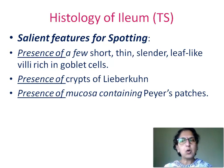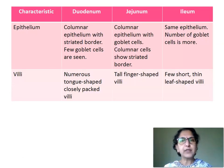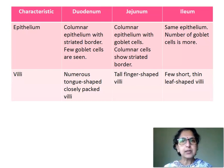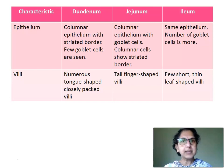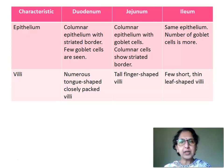Now that we have studied all three slides of histology of the small intestine — duodenum, jejunum, and ileum — let us see how to differentiate between the three. Regarding the epithelium: lining epithelium of villi in duodenum is columnar epithelium with striated border having very few goblet cells. In jejunum, it is columnar epithelium with goblet cells, and columnar cells show striated border due to microvilli. In ileum, the epithelium is the same but the number of goblet cells is more — very few in duodenum, moderate in jejunum, and numerous in ileum. Regarding villi: duodenum has numerous tongue-shaped closely packed villi, jejunum shows tall finger-shaped villi, and ileum shows very few short, thin, slender, leaf-shaped villi.